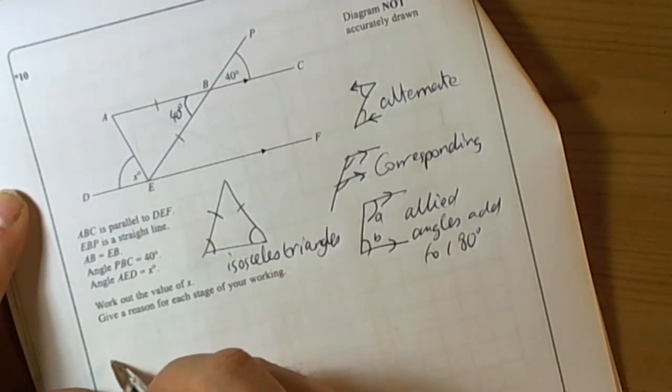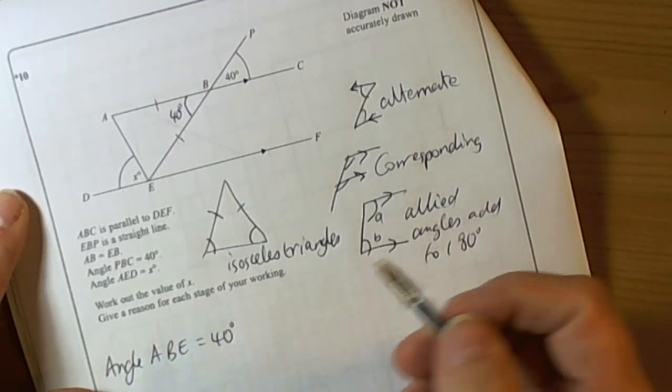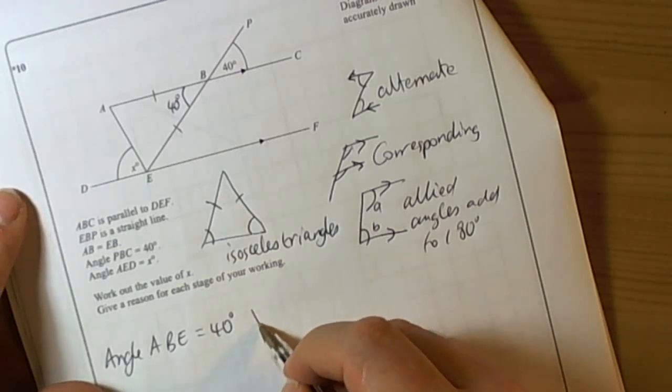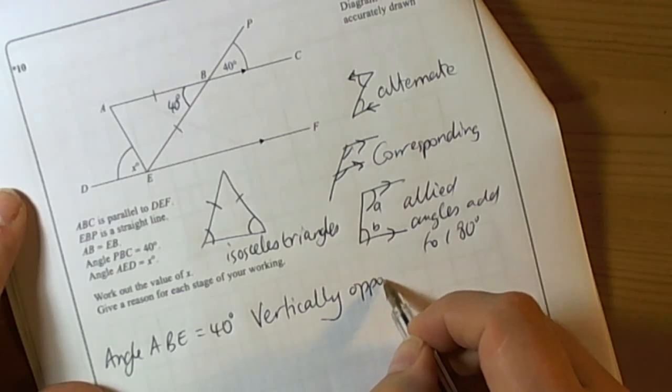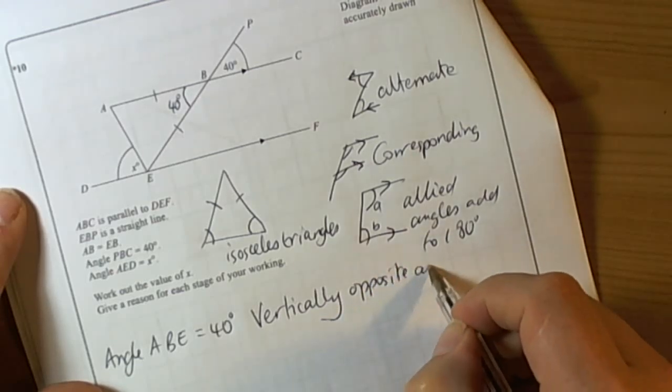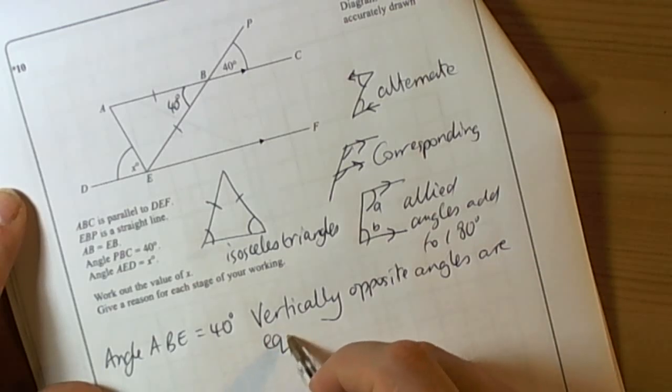So we can say straight away that angle ABE equals 40 degrees. It's a star question so we must give a proper reason: vertically opposite angles are equal.